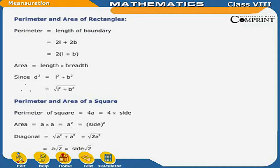Perimeter and area of rectangles: Perimeter is equal to length of boundary, which is equal to 2L plus 2B, that is twice of (L plus B). Area is equal to length into breadth. Since D squared is equal to L squared plus B squared, therefore D is equal to under root of (L squared plus B squared).